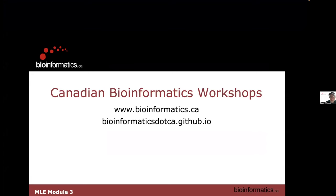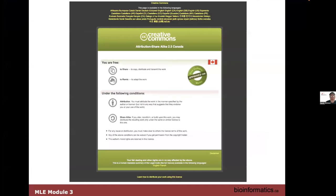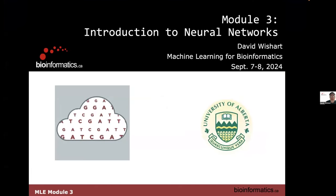We're now on to module three, where we're going to introduce everyone to neural networks. We introduced you to decision trees, which is technically the simplest approach to doing machine learning. And putting together a bunch of decision trees is a random forest.